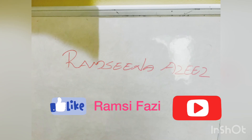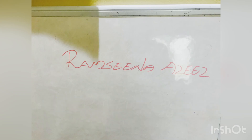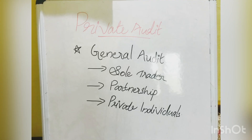Hello, I am Ramsey Nasis. Today I am dealing with the topic Types of Audit. Yesterday we discussed the statutory audit on the basis of organizational structure of the business. Private audit is the second type of audit on the basis of organizational structure of the business. Private audit refers to the audit of accounts of private business enterprises such as trader, partnership firm and private individuals.